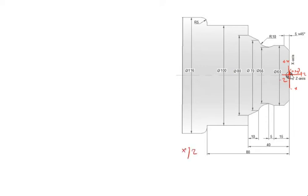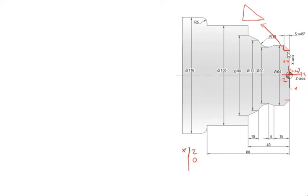We have to write the X and Z values. The X value is not given in this drawing. The Z value is 0. To calculate the X value: 5 into 45 degrees is given. From this data only we have to calculate. This distance is 5, so this value is also 5. Draw the triangle based on this — the angle is 45 degrees, so you have to write 45 degrees here.